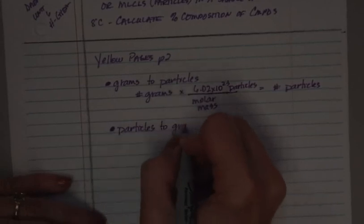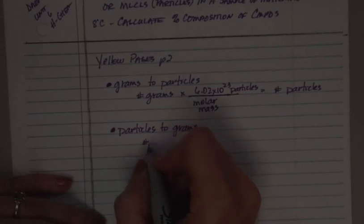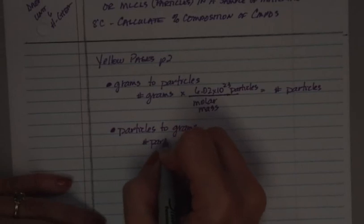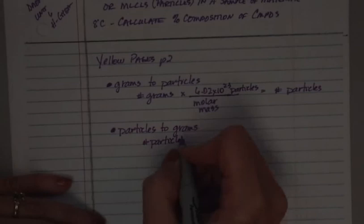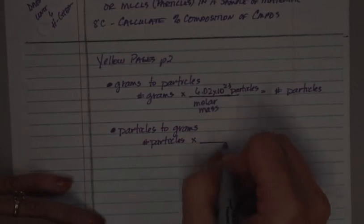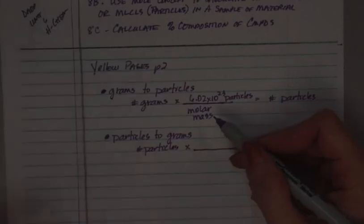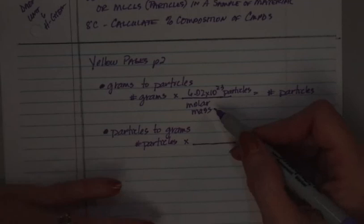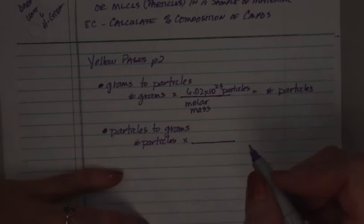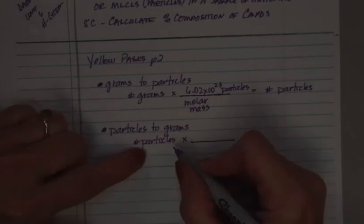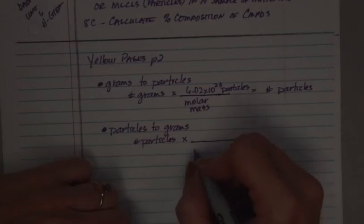Write down what they give me in the problem, which is always going to be some number. So, particles to grams, I'm going to go just backwards from this. So, they're going to give me number of particles, number of atoms, number of molecules. And I'm going to multiply it by the conversion factor because I know that 6.02 times 10 to the 23rd is always going to be equal to the molar mass of a particular compound.